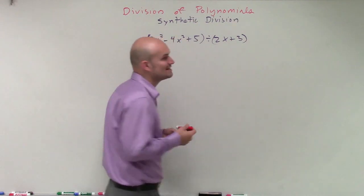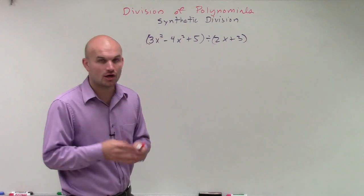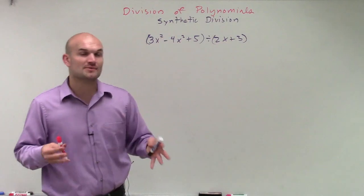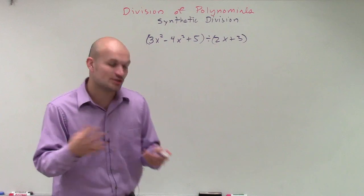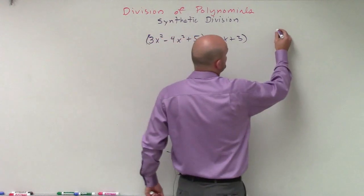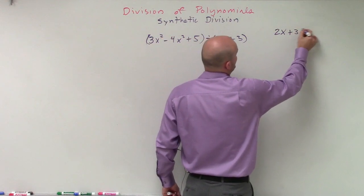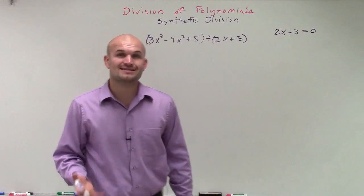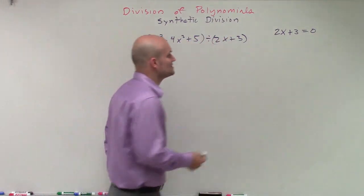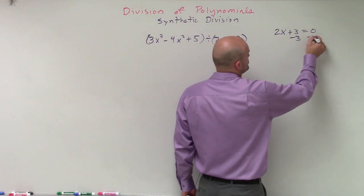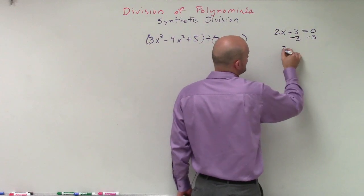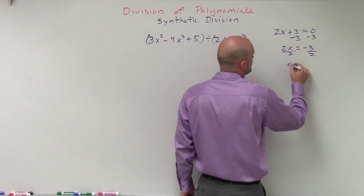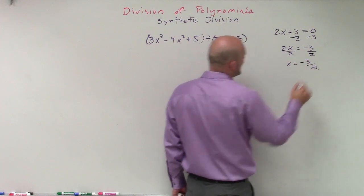When determining the value of k that we're going to use, remember on the easier problems I set the binomial equal to 0, and we're going to do the exact same thing. So I take 2x plus 3 and set it equal to 0. Solving for x: subtract 3, giving 2x equals negative 3, then divide by 2 — so x equals negative 3 halves.